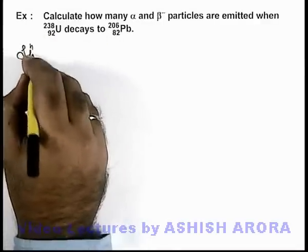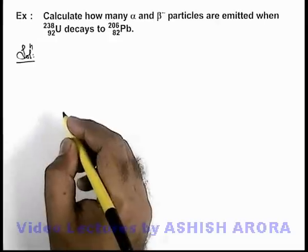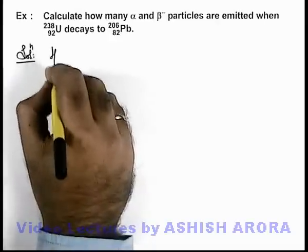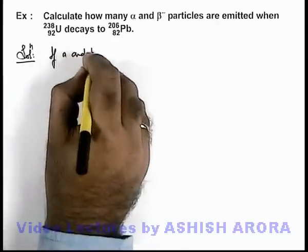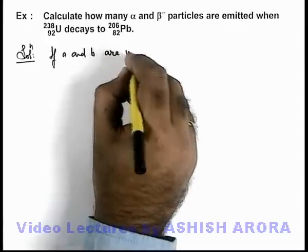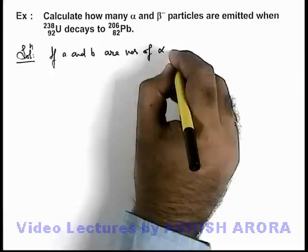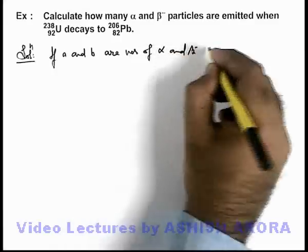Here we can easily calculate it by writing the nuclear reaction. Here we can write if a and b are numbers of alpha and beta minus emitted...